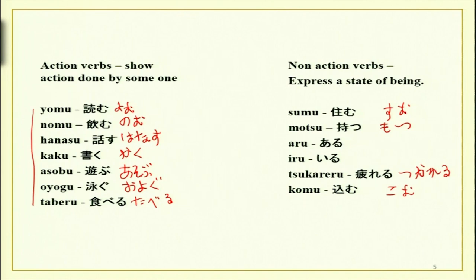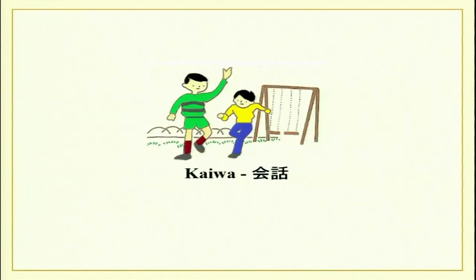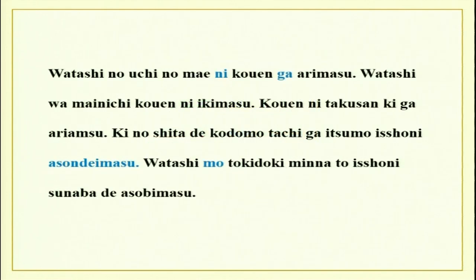Before we begin the lesson, let us listen to the passage. It is a very short kaiba and most of it you will follow, so listen carefully. 私の家の前に公園があります。私は毎日公園に行きます。公園にたくさん木があります。木の下で子どもたちがいつも一緒に遊んでいます。私も時々みんなと一緒に砂場で遊びます。I am sure you would have understood most of it. Now I will do the explanation — it is very simple.